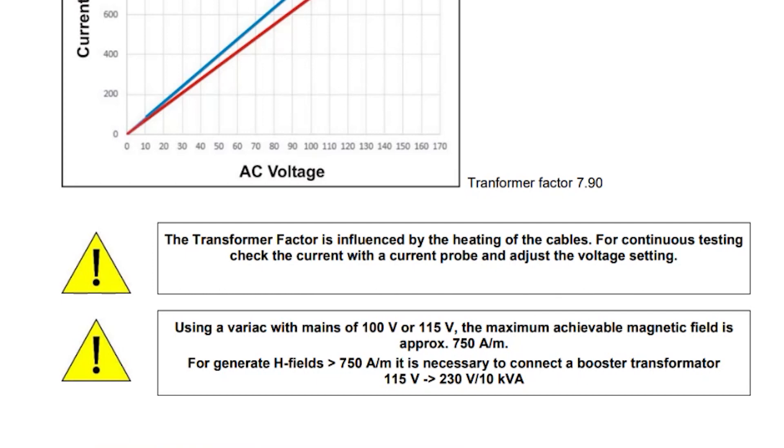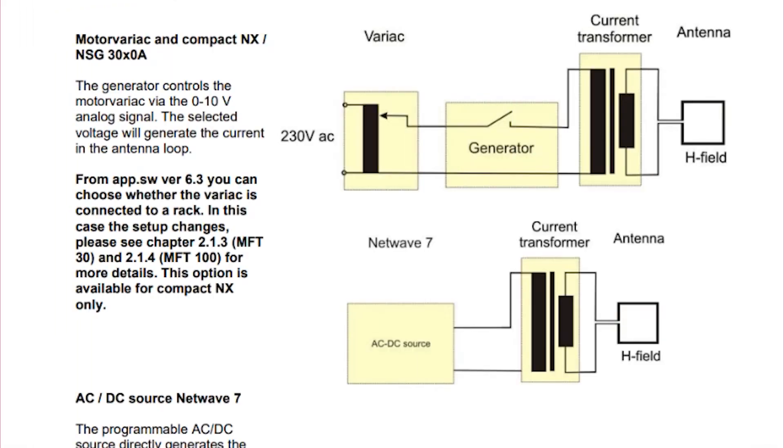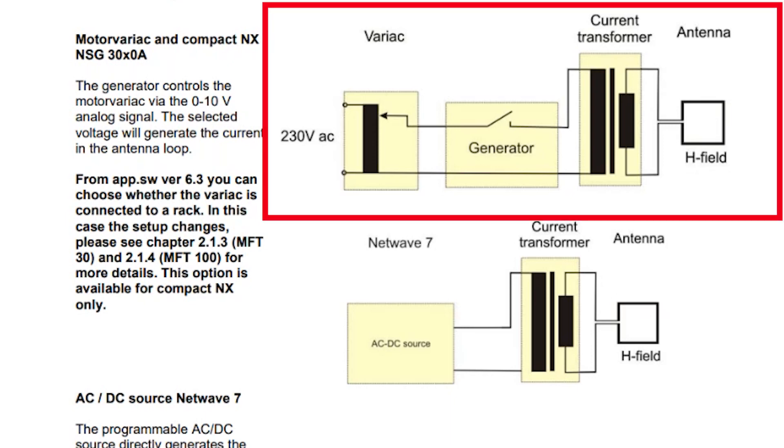Let's go ahead now and scroll down to the next page and take a look at the two different setups and how they can be used with the transformer. So there's two different test setups which are commonly used with our current transformer. The first is using a variac with the corresponding transient generator. With this setup the transient generator is used as the control unit and provides the test routines which are commonly accessed from the front of the system.